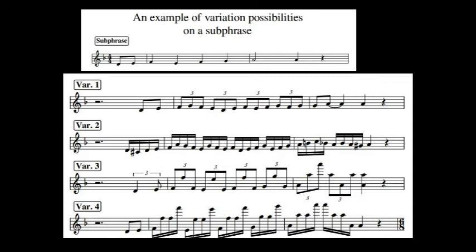To finish this tutorial, I will give you an example of variation possibilities on a subphrase. So here we have a subphrase coming from a hymn and I have created 19 kinds of simple variations on it. The first variation, as you can see, in the first bar I used triplets. The second variation, I used the same rhythm for each note except for the last note.